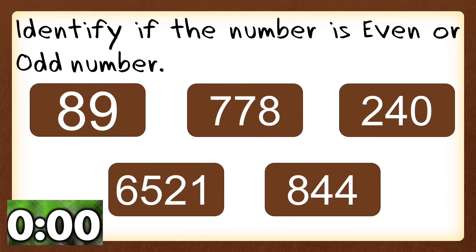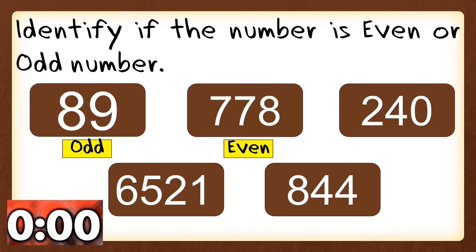Time is up! Let's go through the answers — check your work. Number one, 89, is an odd number because the last digit is 9, and 9 is an odd number. Number two, 778, is an even number because the last digit is 8.